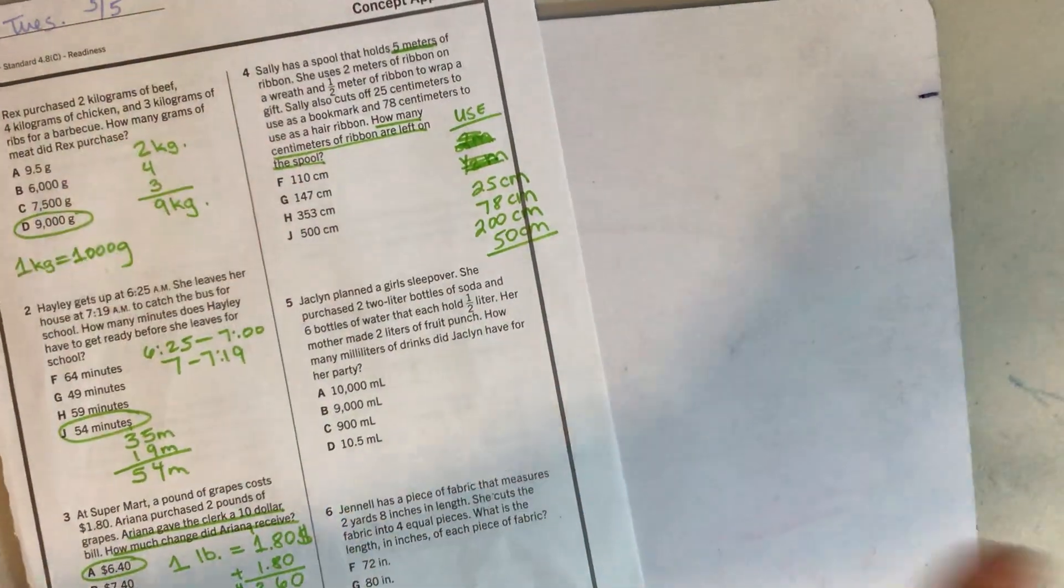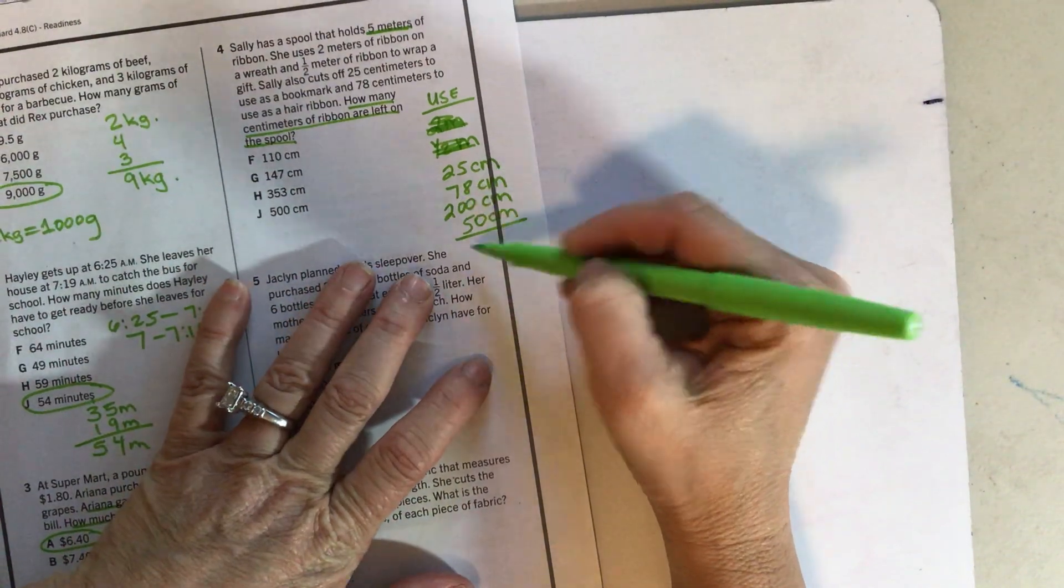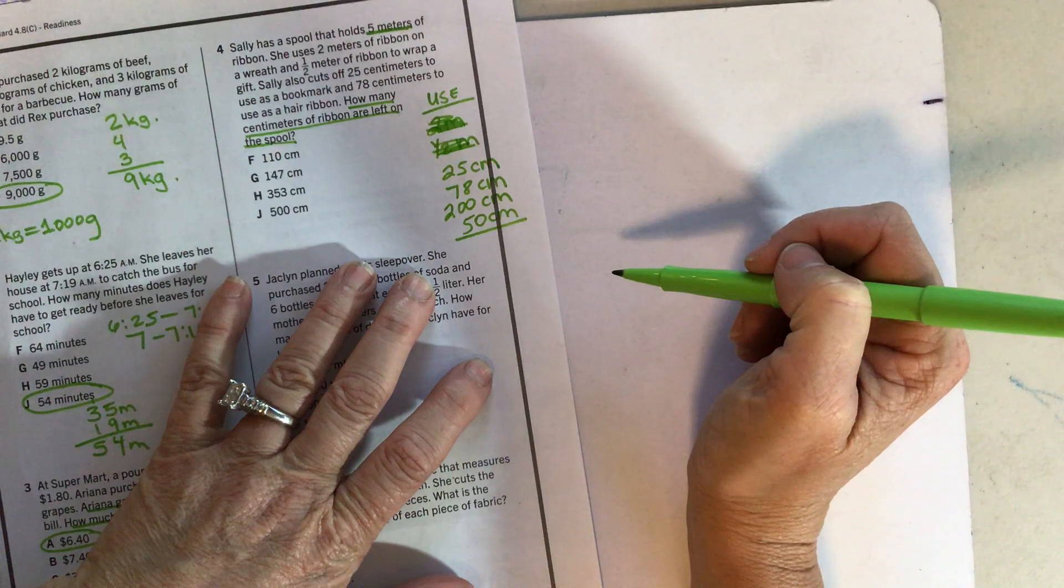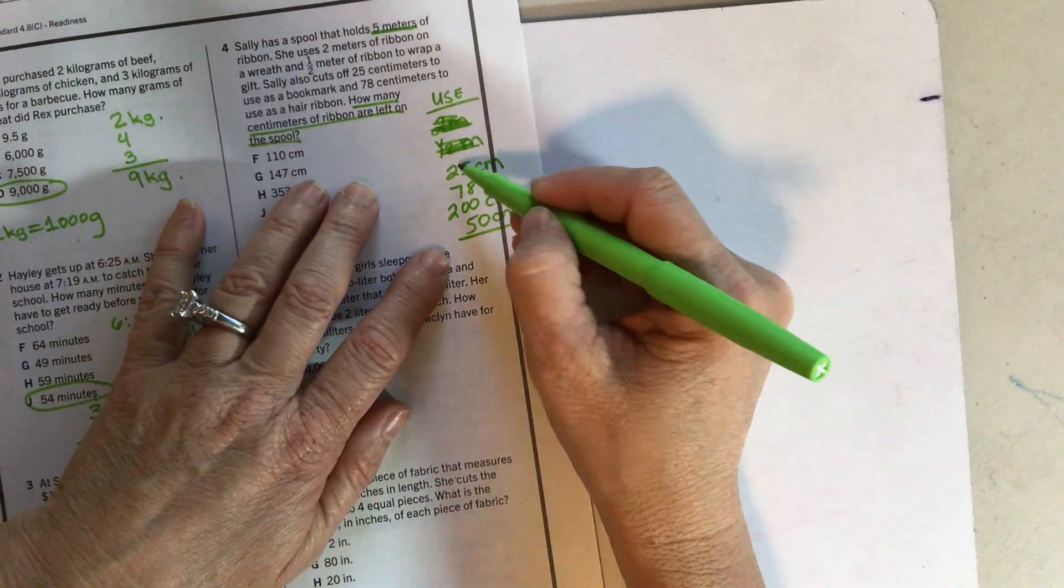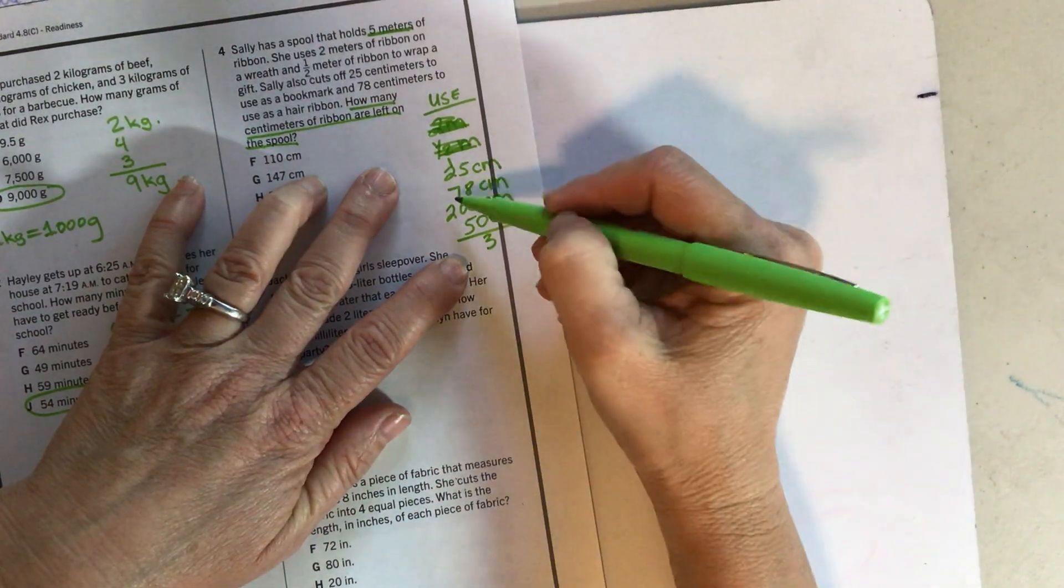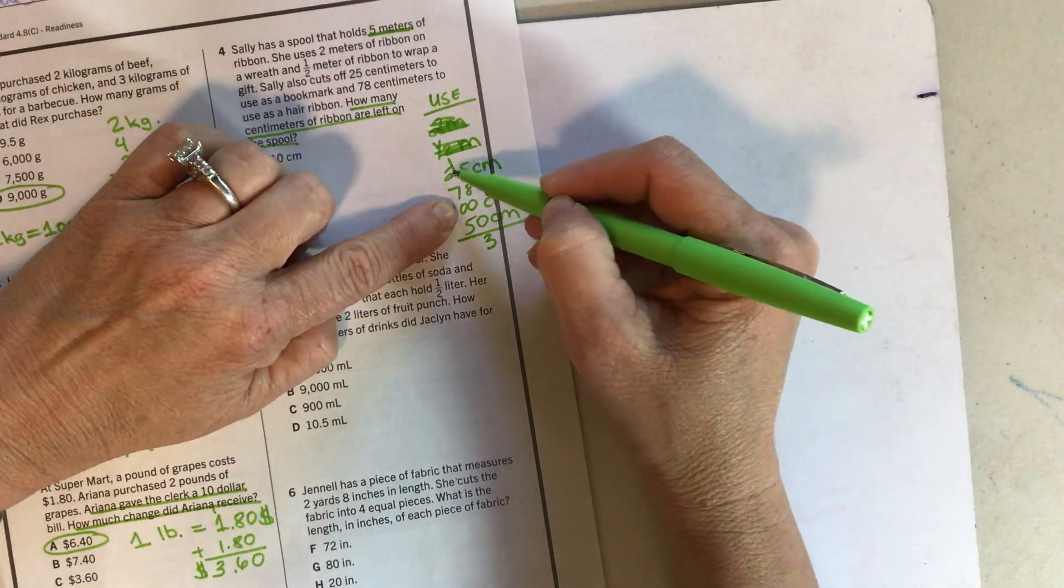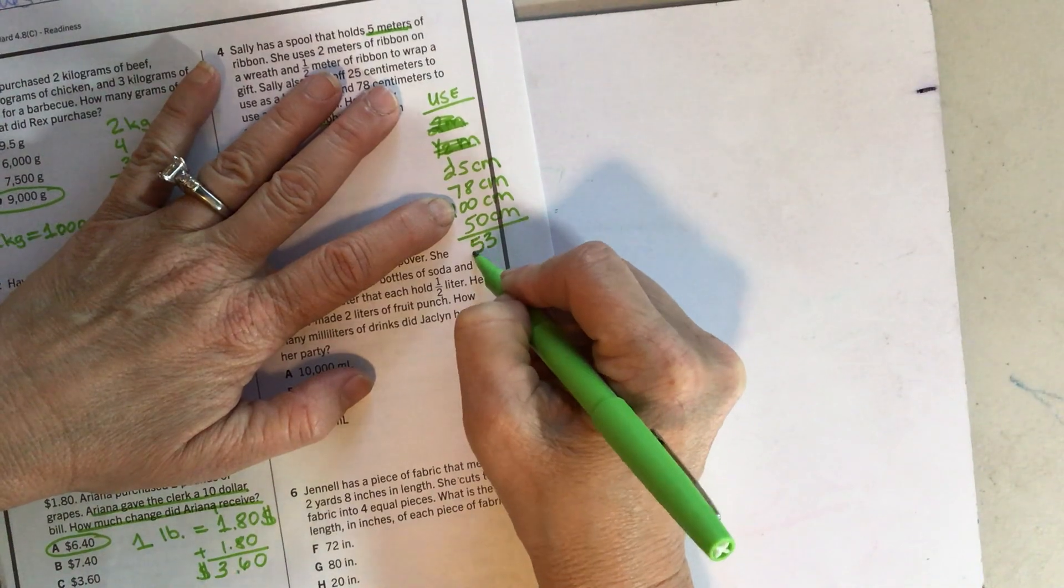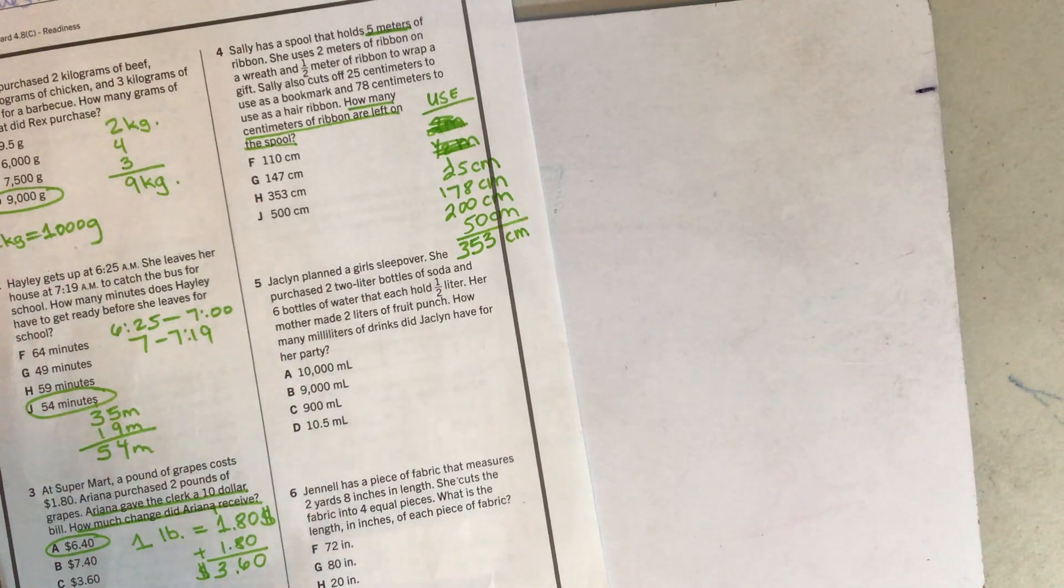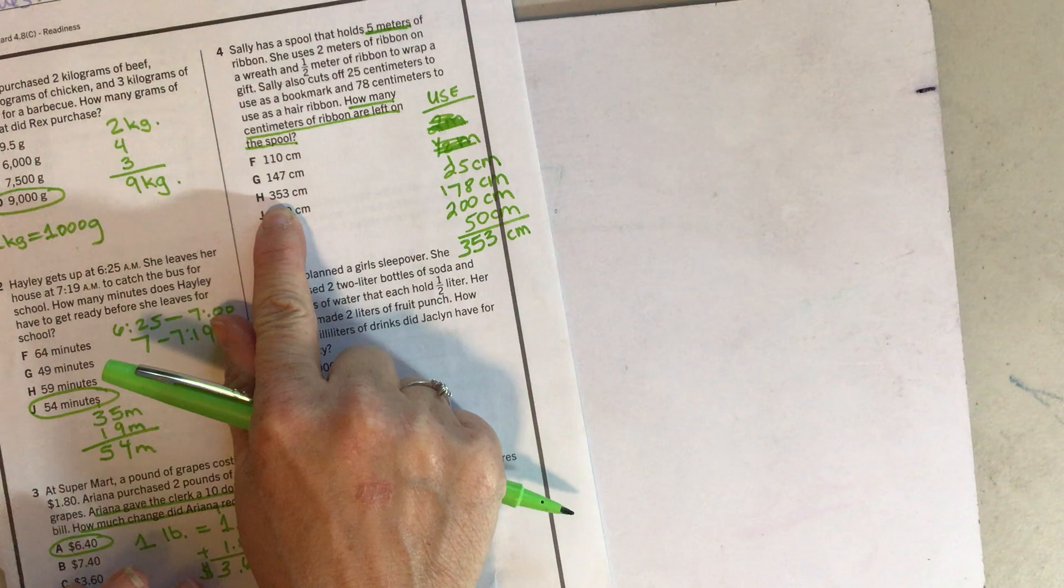So now this is everything in centimeters. DMP, practicing that addition. Stop and pause for just a second. Add those together and see what you get. Let's see. Eight, nine, 10, 11, 12, 13. Add my three. Carry my one. Seven, eight, nine. One, 353 centimeters is what she used. Notice that is a choice. I stopped right there. Circled my answer and went on.